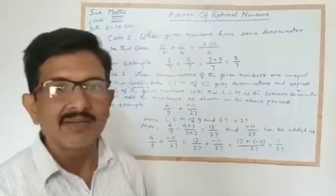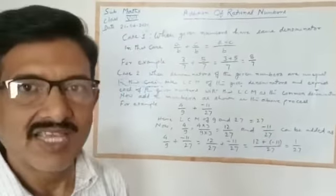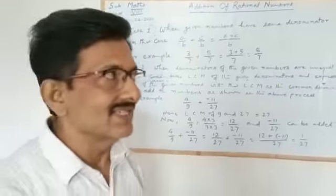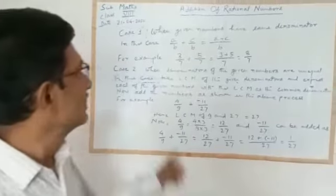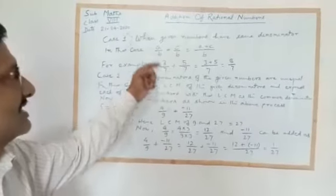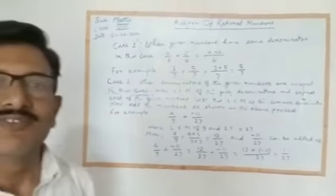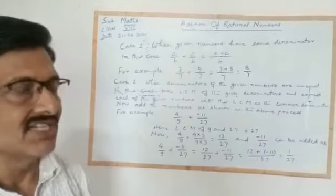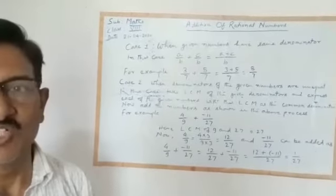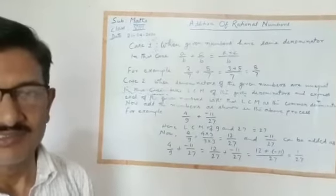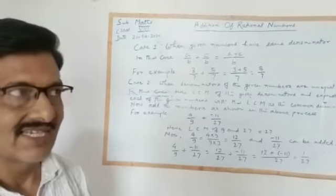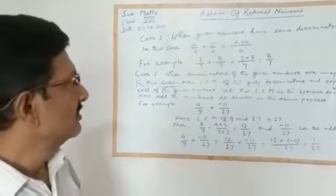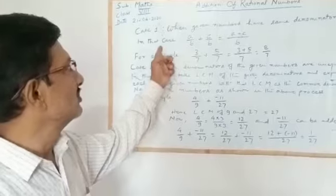In adding the numbers, we have two cases. In the first case, we consider when the given rational numbers have the same denominator. In that case, we have to follow this rule.